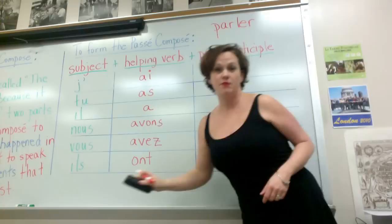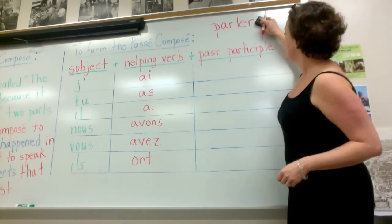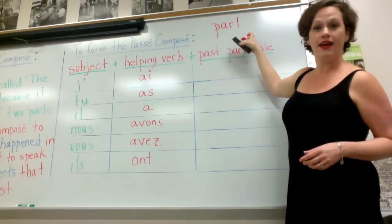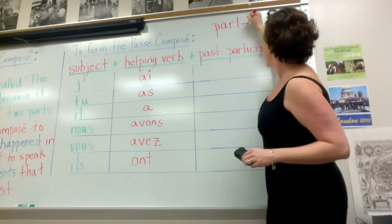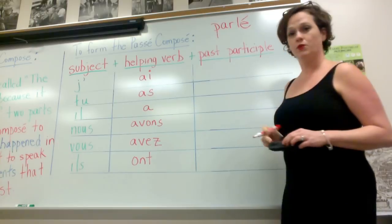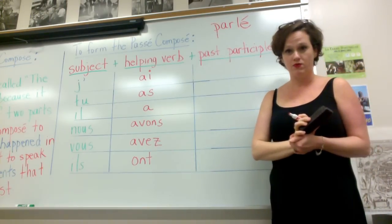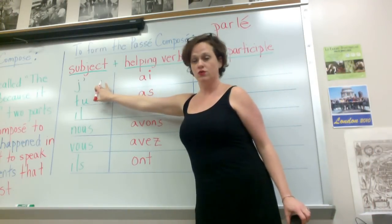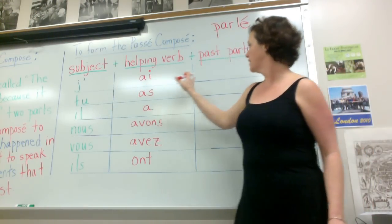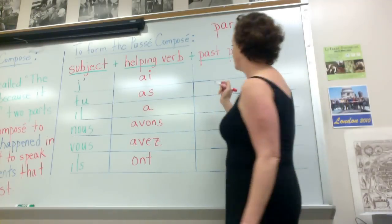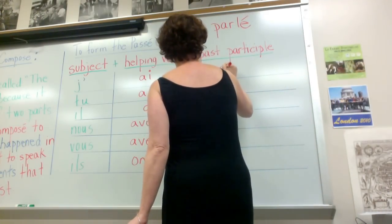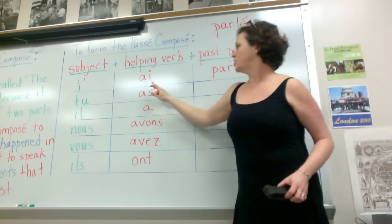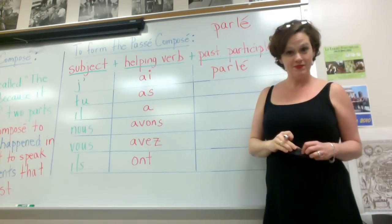In order to get the past participle, what you do is you take off the ER, alright? You're left with P-A-R-L, and then you just add an E with accent aigu, and there you have it. That's your past participle. So to say 'I spoke,' je, j'ai, and then your past participle, in this case, will be parlé. I spoke, j'ai parlé. You see, that's not so difficult.